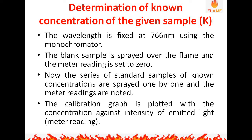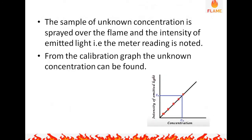For the blank, distilled water is used and the meter reading is set to zero. Next, a series of standard solutions of known concentration are prepared. These solutions are sprayed one by one in the flame photometer and the readings are noted. Using these readings, a calibration graph is plotted with concentration on the x-axis against the intensity of the emitted light, or meter reading, on the y-axis. Then the sample of unknown concentration is sprayed over the flame and the meter reading is noted.